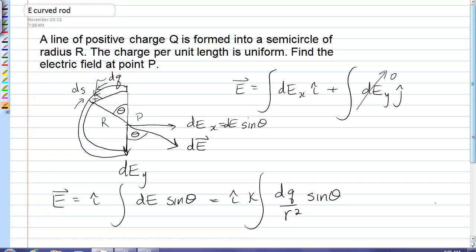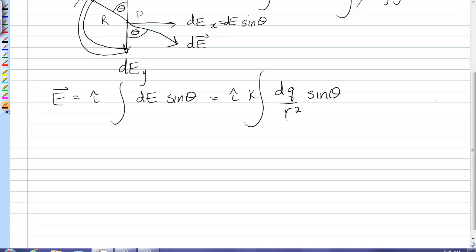Now as I move around that semicircle the distance little r from the point of interest to dq remains constant and is in fact equal to big R. So I can pull that out of the integral because that stays constant and I'm having to integrate dq sine theta.